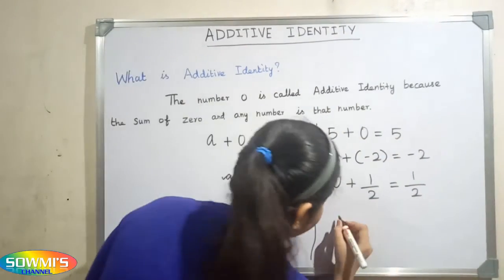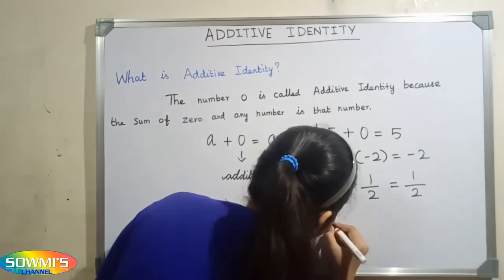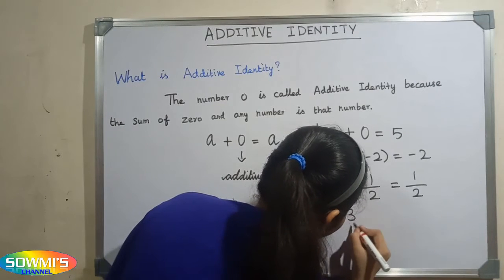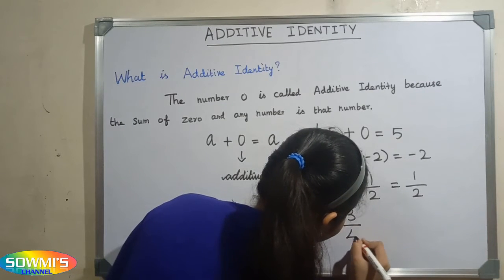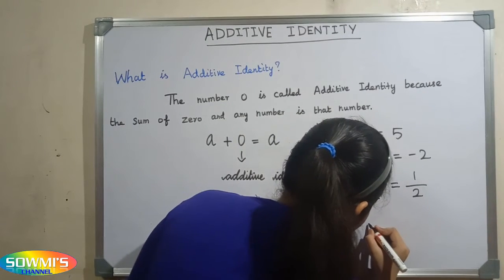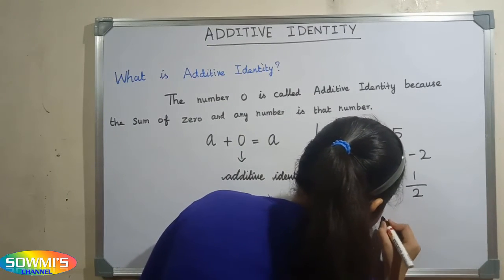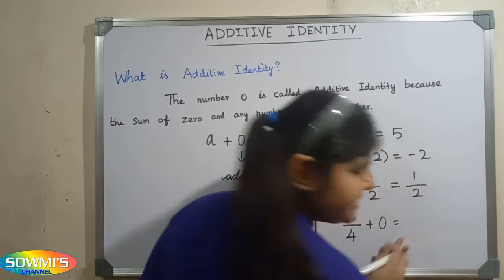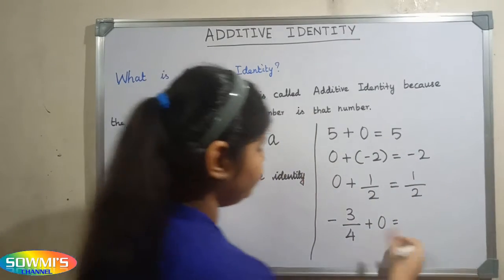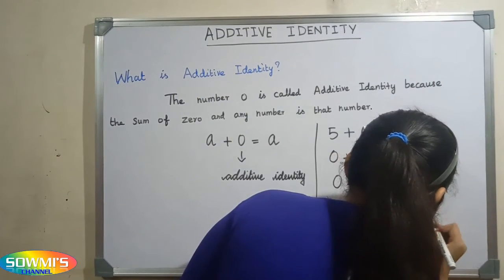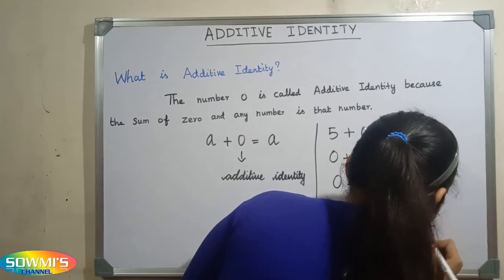Next we will take minus three by four plus zero, which is equal to minus three by four.